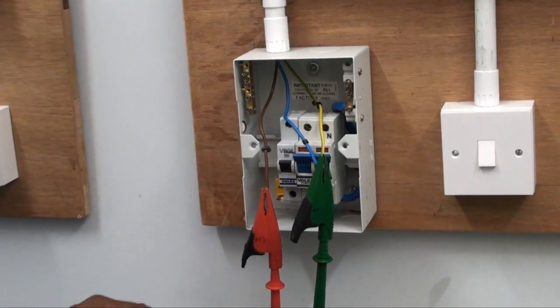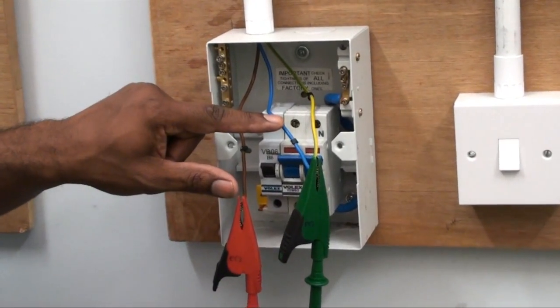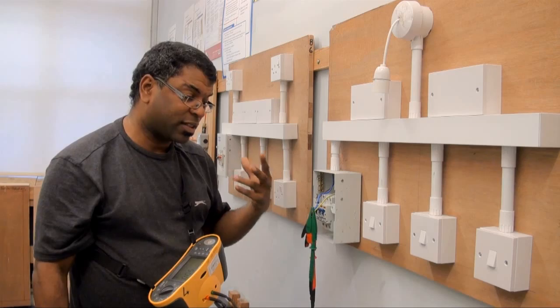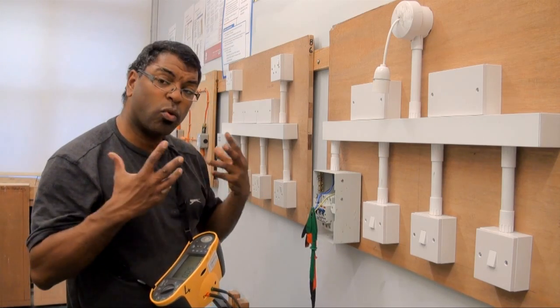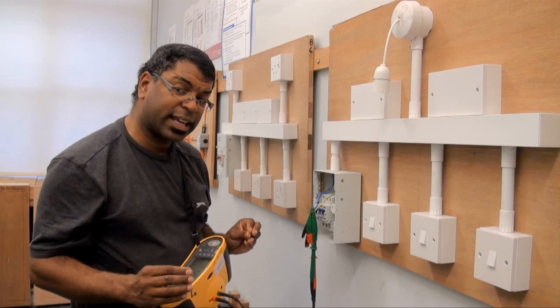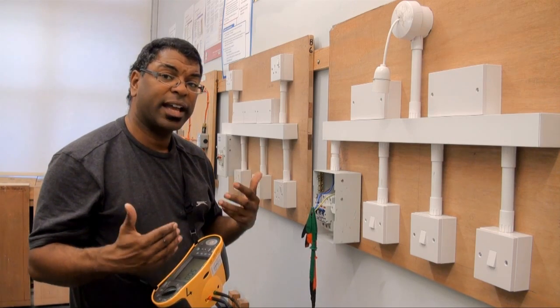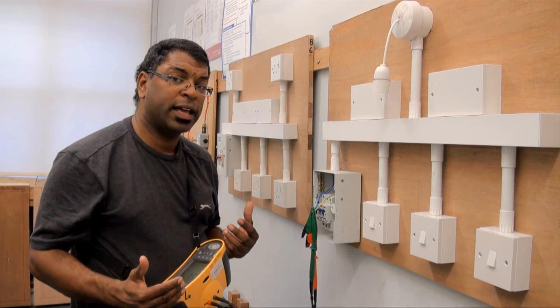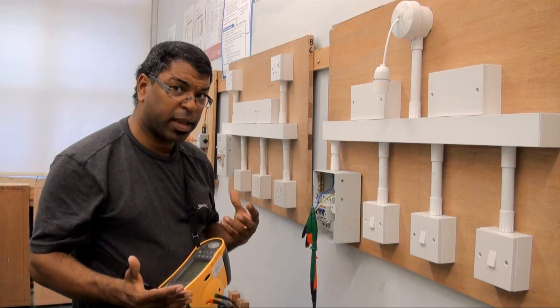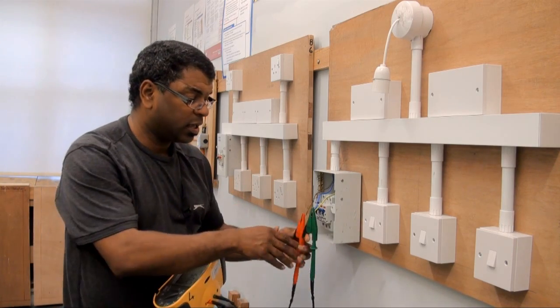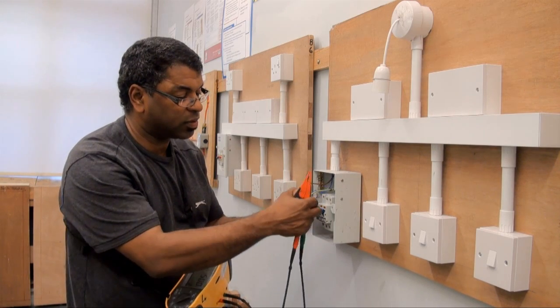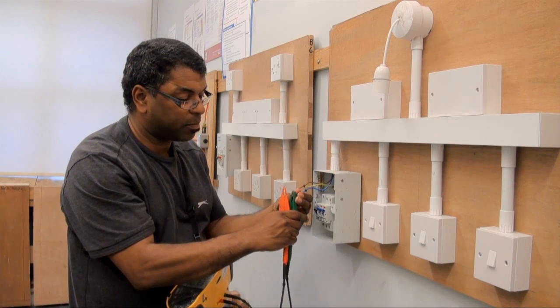But as you can see I've tested between my line, my neutral and my CPC, but I haven't tested between my neutral and my CPC. So I want to do that combination and once I've done that combination then I've done all the combinations that I need to do. And as long as I get the correct results I can fill in on my schedule of test results 500 mega ohms and that's absolutely correct and that's what I'll be after.